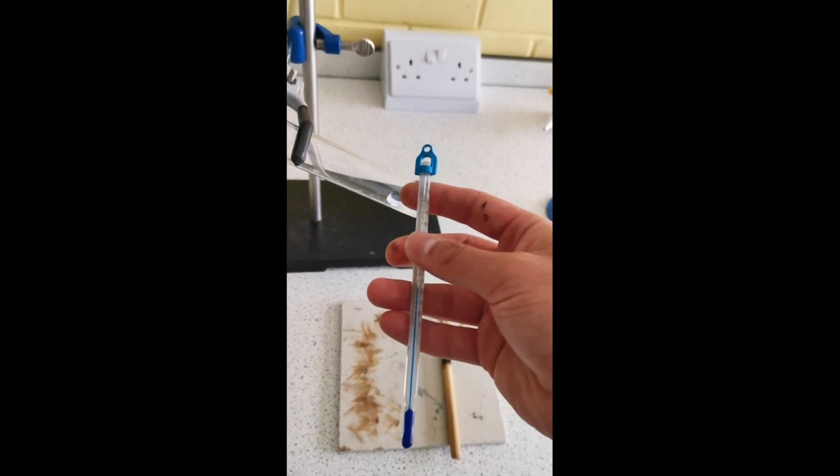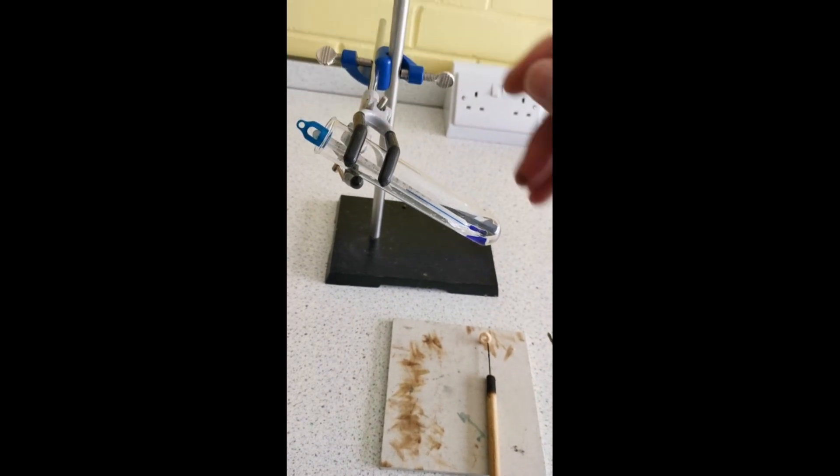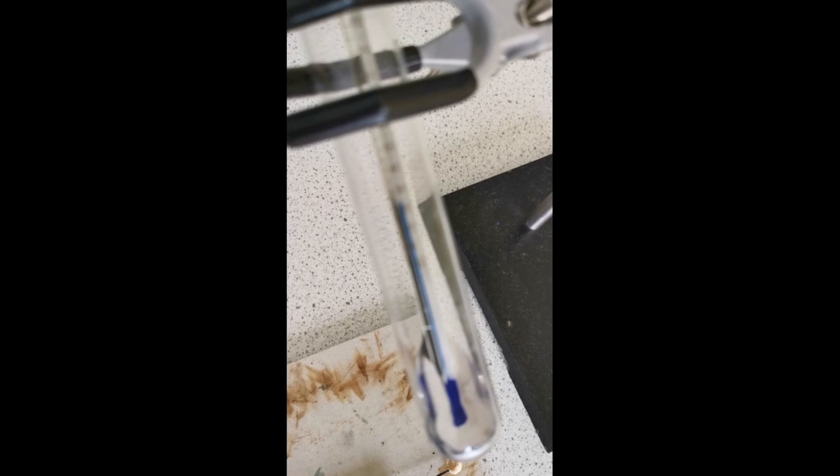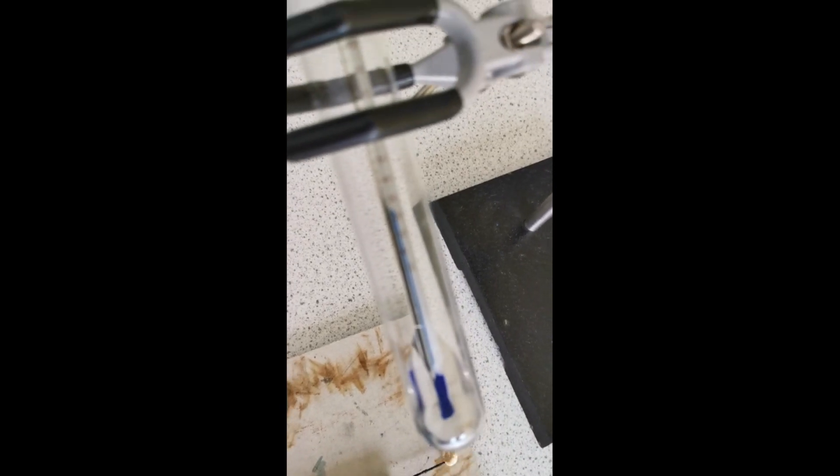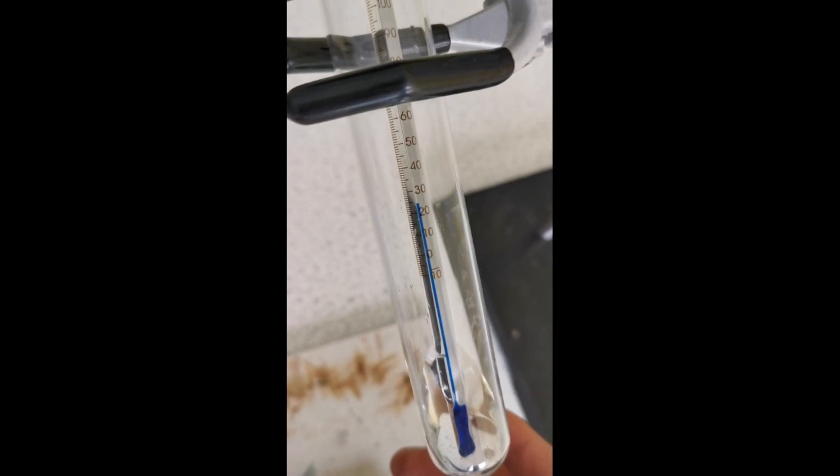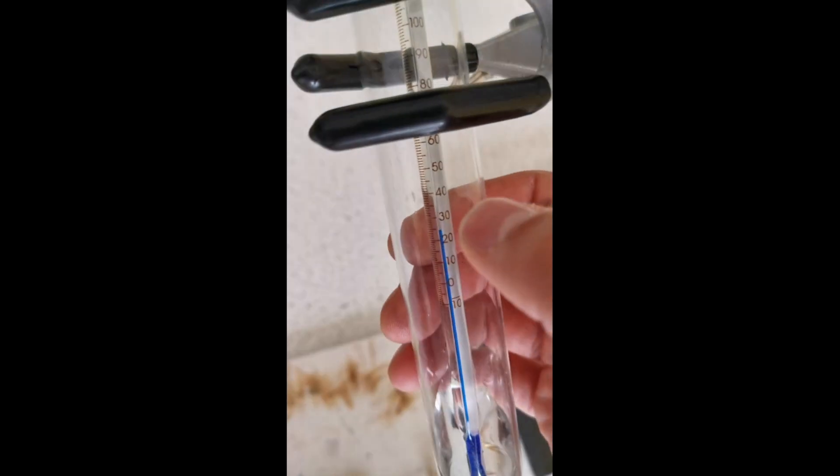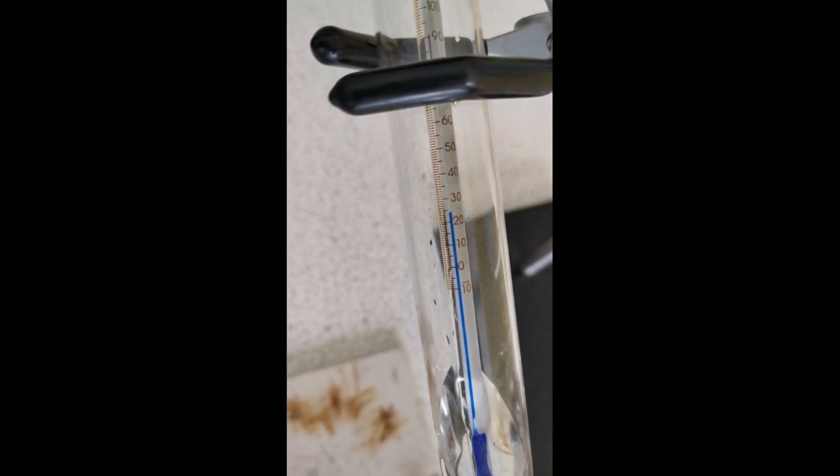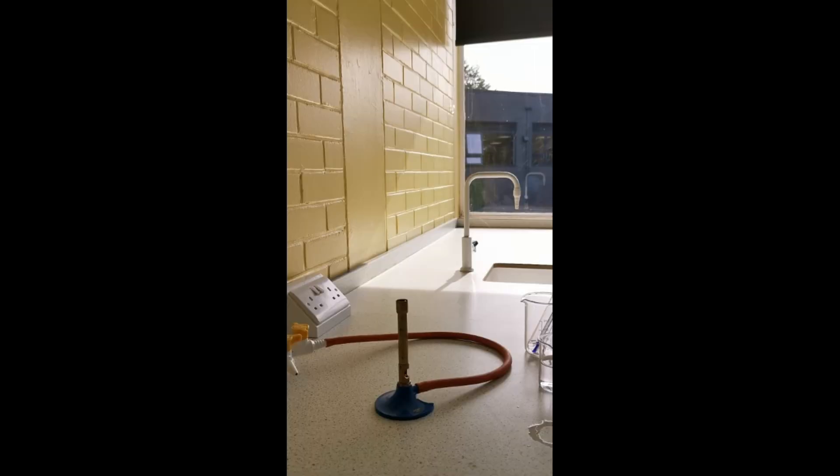Then you want your thermometer to measure the temperature of the water before and afterwards to go in like that. As you can see, the temperature on the thermometer is 20 and then it goes up four lines, so 24 degrees Celsius.